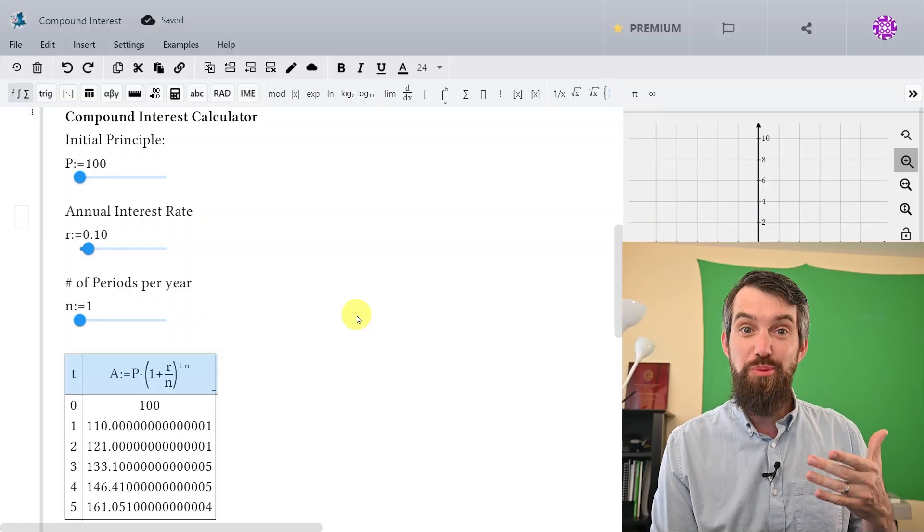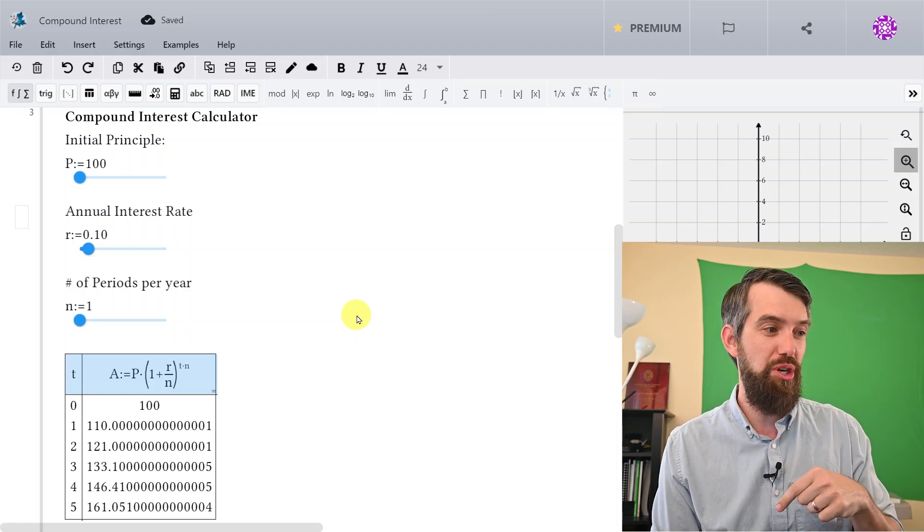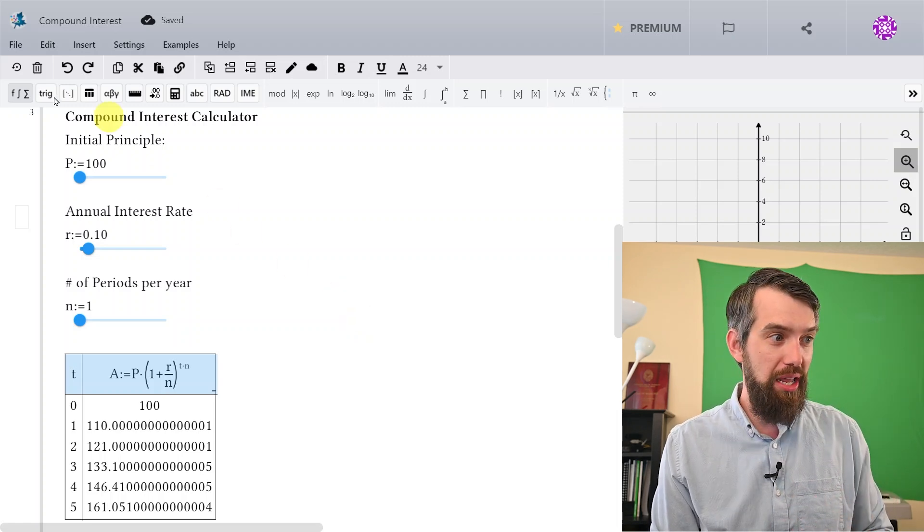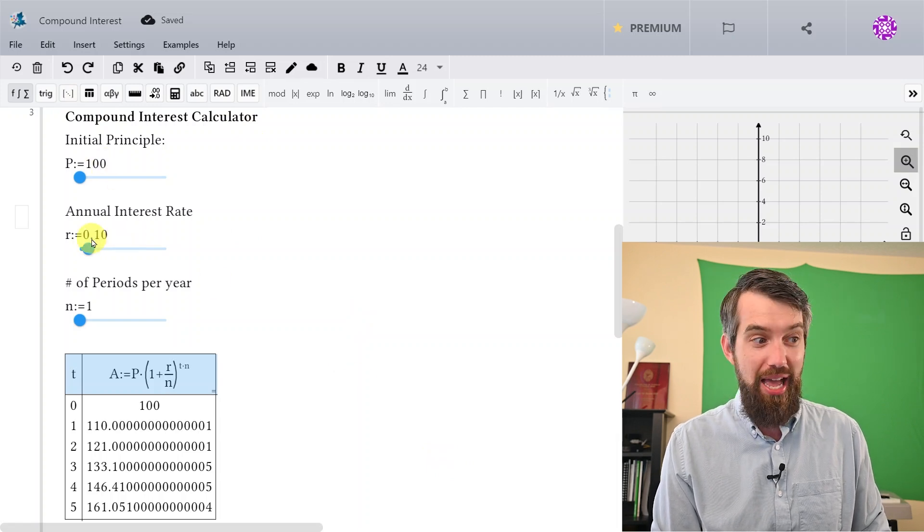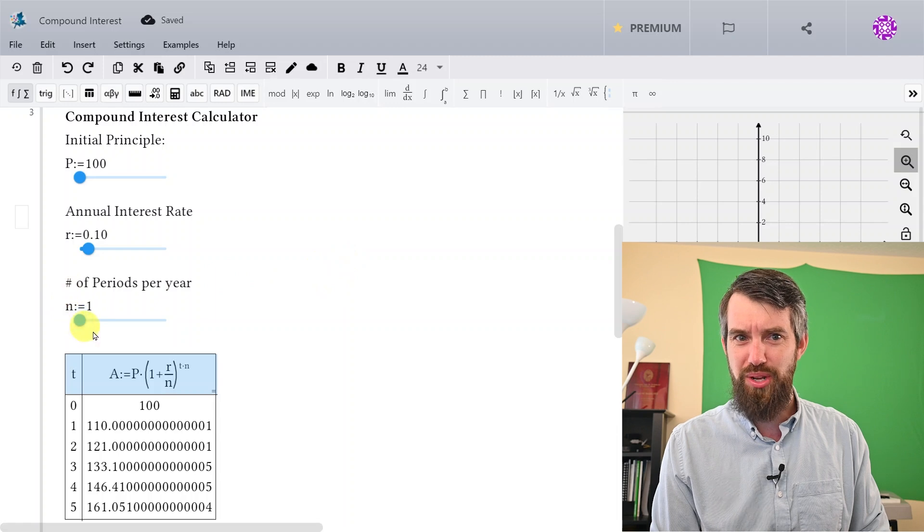Alright, so back to my Maple workbook, again the link is down in the description. And I've made a new calculator for compound interest this time. I've set my principal, I've set my interest rate, and then I've also had this extra factor, which is the number of periods per year, which is currently set to 1.